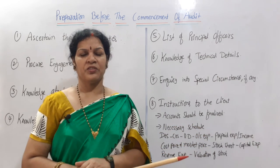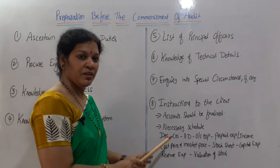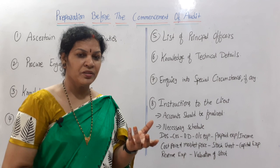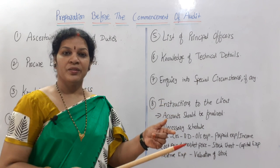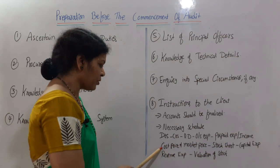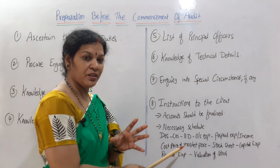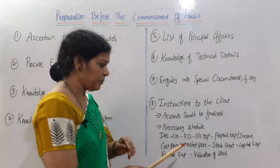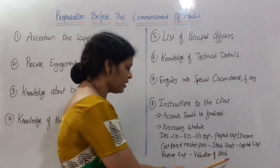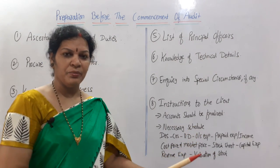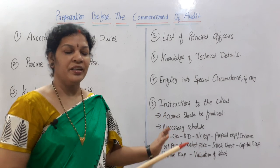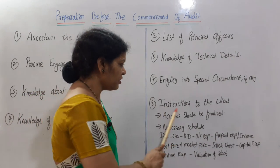The second instruction under this step is to provide necessary schedules — items not included in the trial balance, such as the list of debtors and creditors, bad debts, reserve for doubtful debts, outstanding expenses, prepaid expenses, prepaid income, cost price and market price of stock or material, the full stock sheet, and classification of capital expenses versus revenue expenses, as well as stock valuation. These necessary schedules must be provided by the client to the auditor for complete clarity.